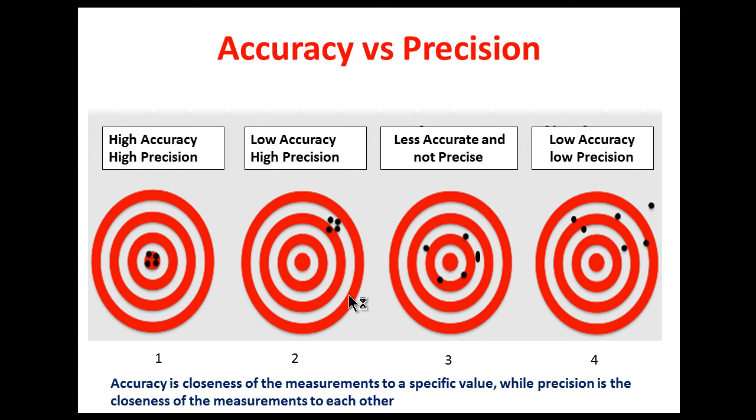So we can say that accuracy is the degree of closeness to the true value, and precision is the closeness of the measurements to each other.